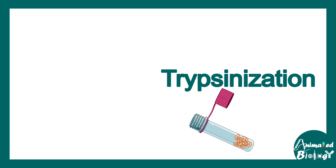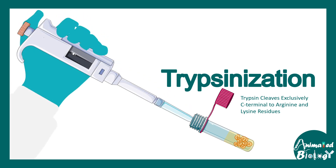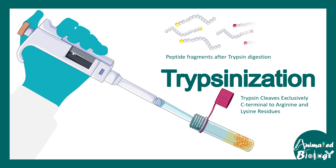Then the cells would be lysed using a lysis buffer, and from the cell lysate, proteins would be extracted. Those proteins would eventually be trypsinized to create peptide fragments. Trypsin always cleaves at the C-terminus of basic amino acids, so after trypsinization, one would get different fragments. Each of these fragments would be labeled with either heavy arginine or light arginine.